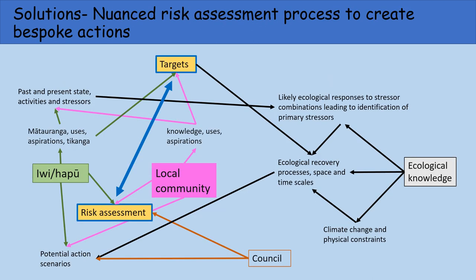What do we mean by a nuanced risk assessment process? Basically this: there are three knowledge outputs — iwi and hapū in green, local community in purple, and ecologists. The in-place knowledge, uses and aspirations drive the targets, define the present and historic state, and all three contribute to potential action scenarios to be run. This may not be a simple solution, but it is a promising solution that everybody could be involved in.